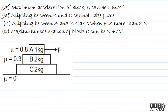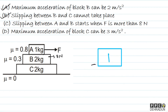Now let's check option C: slipping between A and B starts when F is more than 8 N. At the moment when friction between A and B is at its maximum value of 8 N, block A is exerting 8 N forward on B, and B exerts 8 N backward on A. At this moment, the acceleration of B and C is 2 m/s².